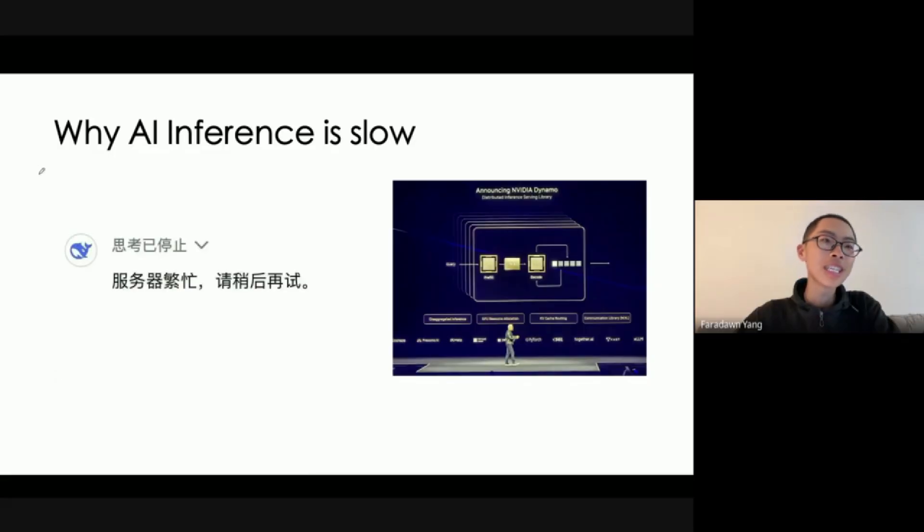First, the question is, why is AI inference slow sometimes? In GPT or DeepSeek, have you encountered server error or loading issues? Is it because the hardware is not fast enough or the algorithm is not smart enough? The answer might be counterintuitive. It's actually how we deploy the AI that caused this problem. So it's a system problem.